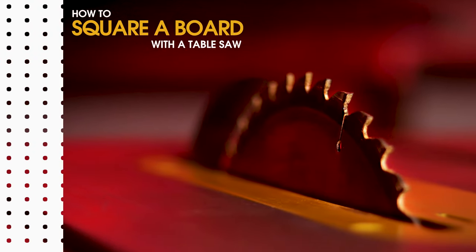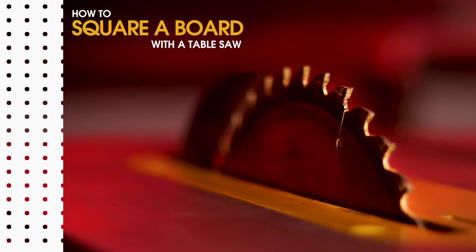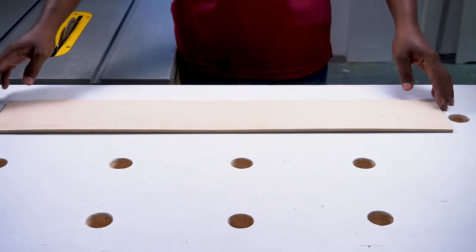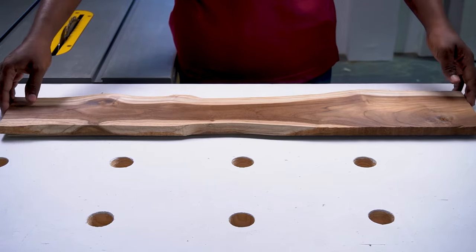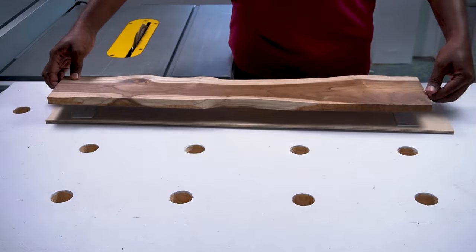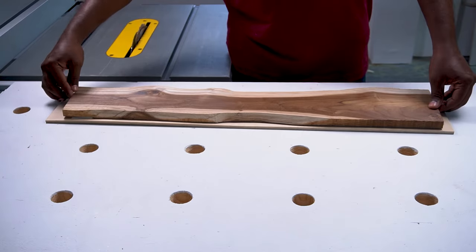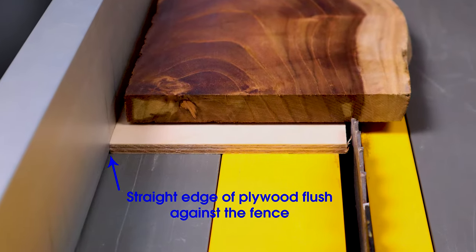In this video I'll show you how to accurately square a board with a table saw. Take a scrap piece of plywood with at least one straight edge. Place the board to be squared on top of the plywood. Attach the board to the scrap wood using double-sided tape. Place the straight edge of the plywood flush against the rip fence of the table.